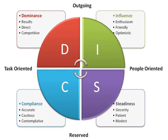Compliance: People with high C scores adhere to rules, regulations, and structure. They like to do quality work and do it right the first time. High C people are careful, cautious, exacting, neat, systematic, diplomatic, accurate, and tactful. Those with low C scores challenge the rules and want independence, and are described as self-willed, stubborn, opinionated, unsystematic, arbitrary, and unconcerned with details.